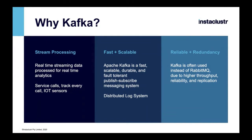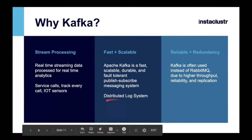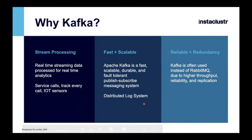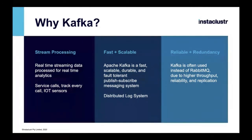Technically speaking, it works like a distributed log system — you can visualize it as a log system handled in a distributed manner. Reliability and redundancy come from data replication. Kafka is often used instead of RabbitMQ due to high throughput, reliability, and replication. Because of data replication and redundancy, it is very, very reliable, and it is very rapidly replacing systems like RabbitMQ.